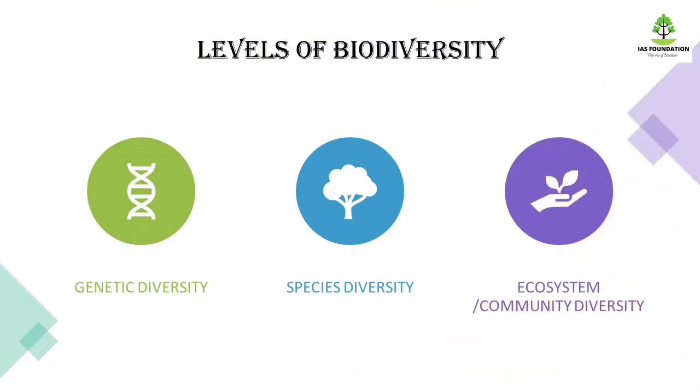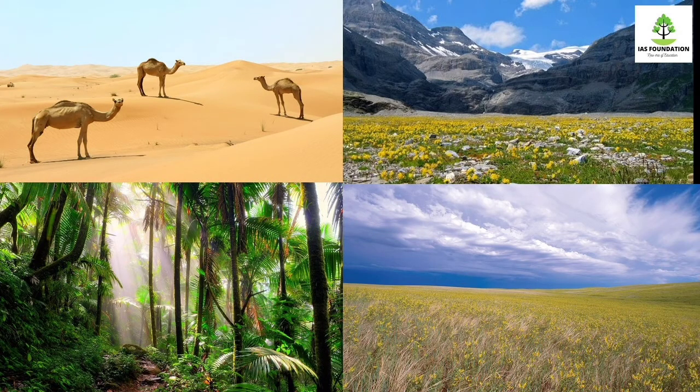What is ecosystem or community diversity? There are different ecosystems on the Earth, established by different climate conditions. That is the ecosystem or community diversity. For example, if you look at wetlands, tropical green forests, temperate green forests, or deciduous forests — this is community diversity.